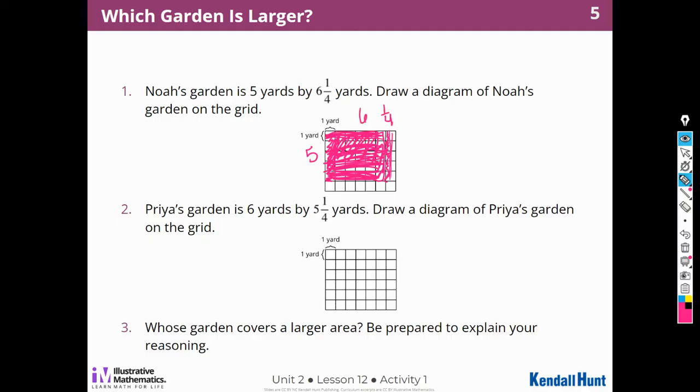And then Priya's garden is 6 by 5 and a fourth. So 1, 2, 3, 4, 5, and a fourth. So we're going to do a fourth like that. And this will be 1, 2, and this will be the 5. So we can shade that in. So this is 5 and one-fourth. 1, 2, 3, 4, 5, 6 over here like that.